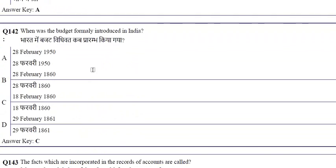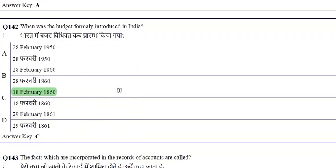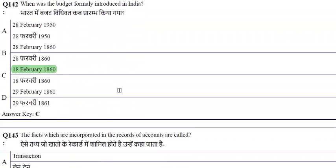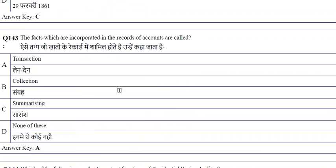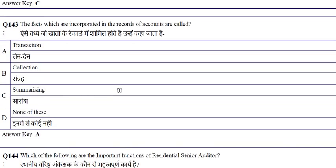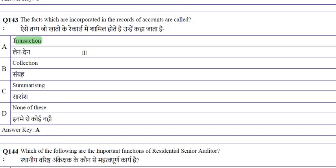The budget was formally introduced in India on 18 February 1860, after the first war of independence in 1857. The facts incorporated in records of accounts are called transactions.